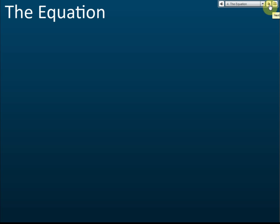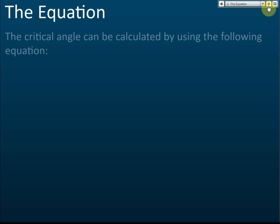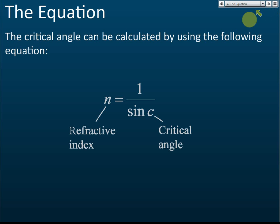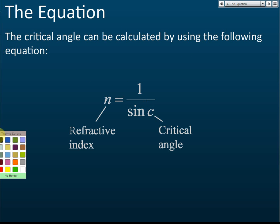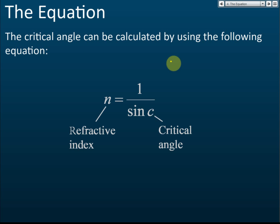This equation is used to find the refractive index. The critical angle can be calculated using the following equations. Let me show you how to get this equation. First, we have learned from Snell's Law that n equals sine i over sine r.